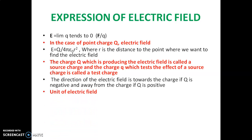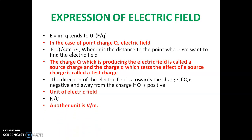Now we will see what is the unit of electric field. From the expression E equals F by Q, the SI unit of force is Newton and the SI unit of charge is Coulomb, so the unit of electric field is Newton per Coulomb, written as N/C. There is one more unit — volt per meter (V/m) — which we will discuss in detail in the next chapter on electric potential. For now, remember that the unit of electric field is Newton per Coulomb.